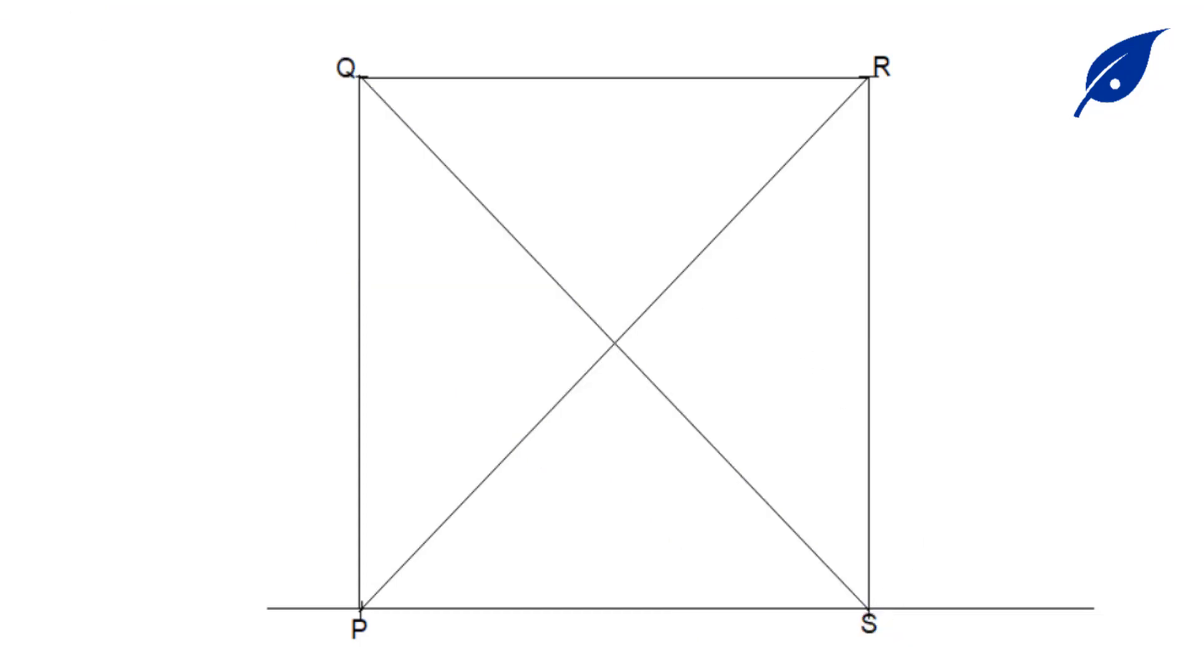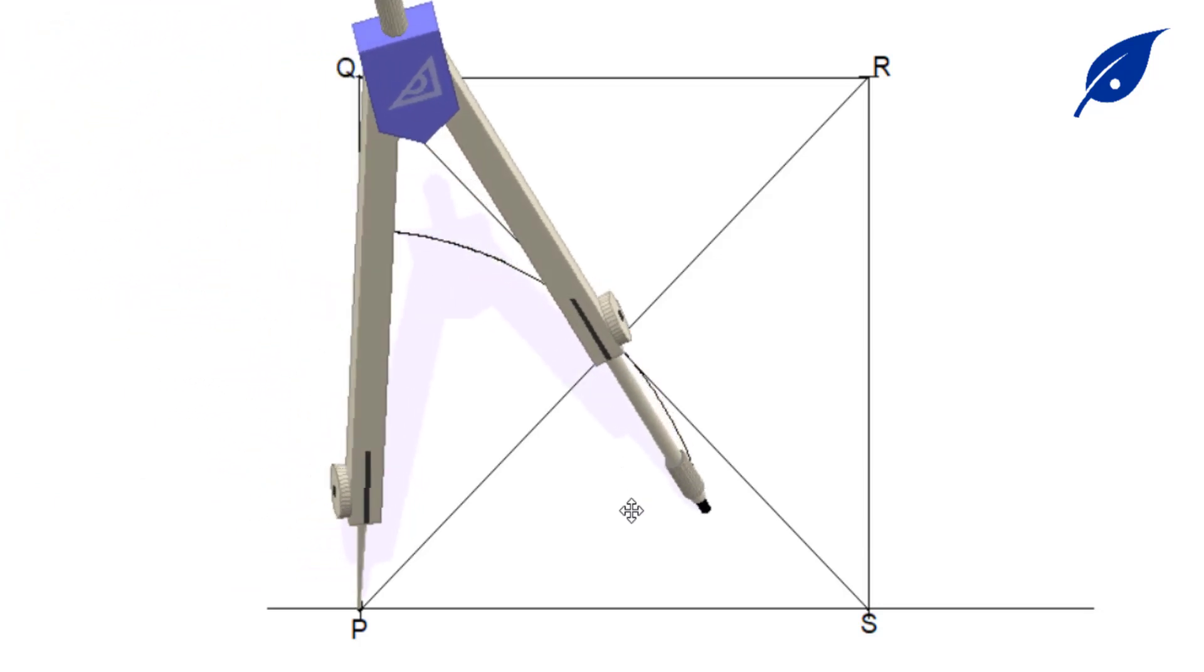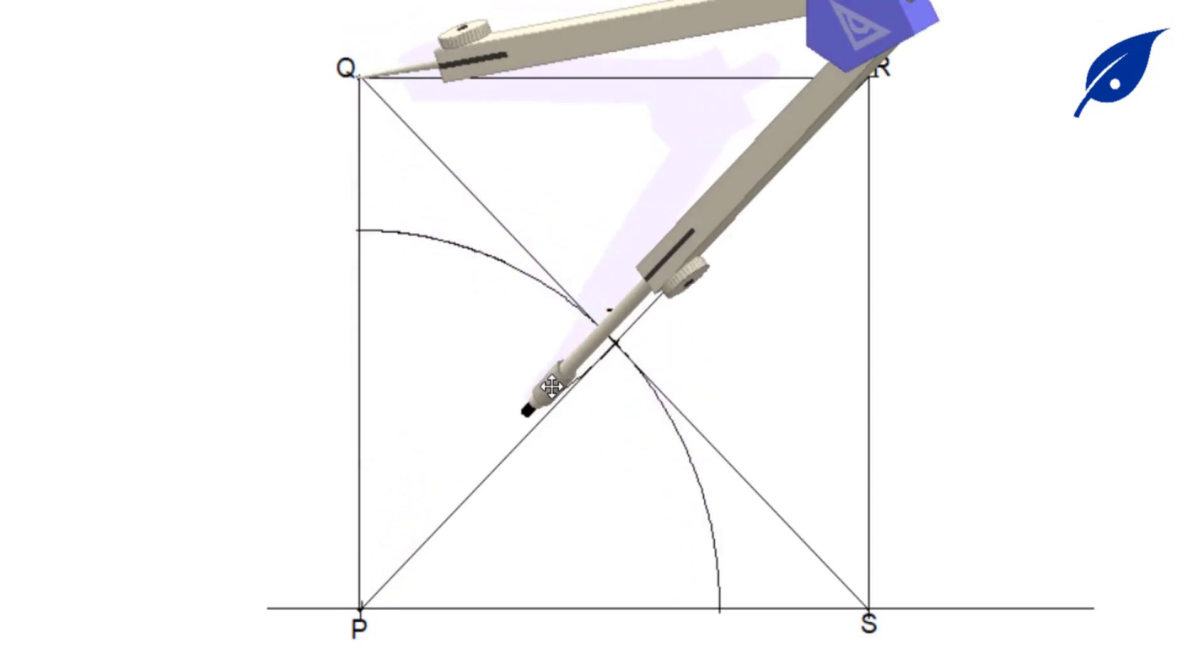From this point T, that would be the center of our arc. With the radius PT and the center at P, we describe the arc to touch the sides of the square. We repeat the same process for Q with the radius QT and center Q to describe an arc touching the sides of the square.